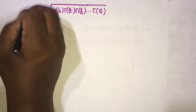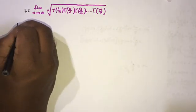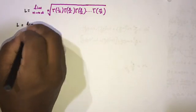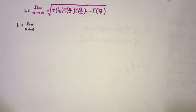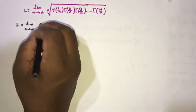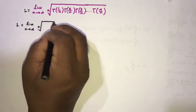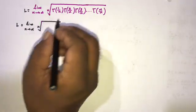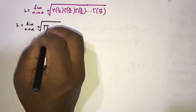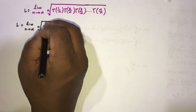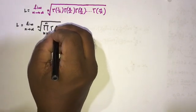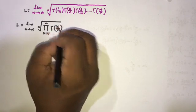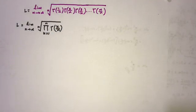We begin by setting this limit equal to L. We can write L equals the limit as n approaches infinity of the nth root of the product of gamma functions, using capital pi notation to represent the product from k equals 1 to n of gamma(k/n).